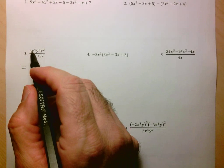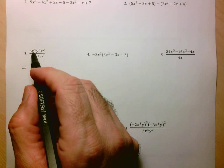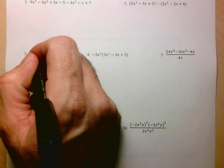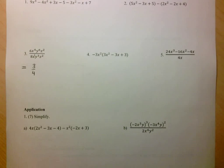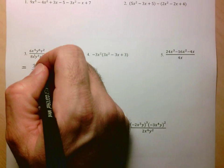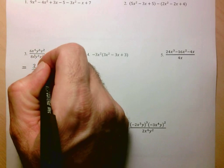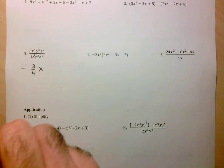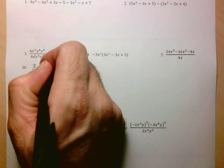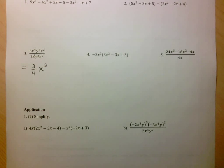Next I look at the powers of x. Here I see x to the power 4, and here I just see x, so we assume it's x to the power 1. The rule for dividing powers with the same base is you keep the same base but subtract the exponent. So 4 minus 1 is 3, which leaves us with x cubed.